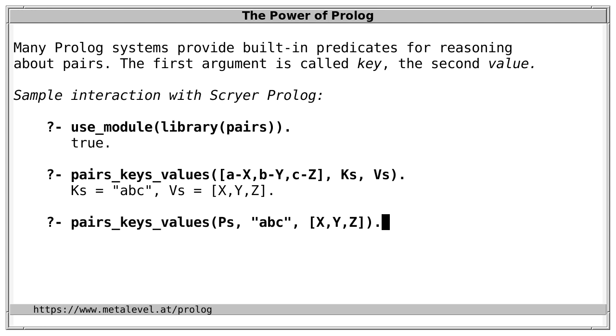We are now turning this around and asking for the pairs in a case where the keys and values are known, or at least partially known, because each of the values is a variable. In response, we get an answer substitution for P's, the list of pairs, and also a redundant choice point.